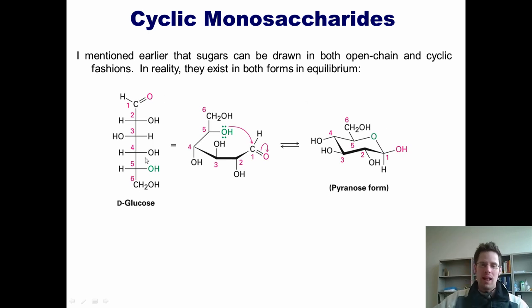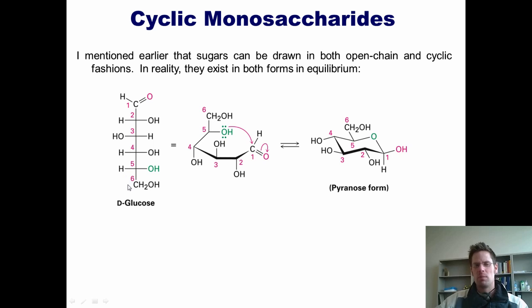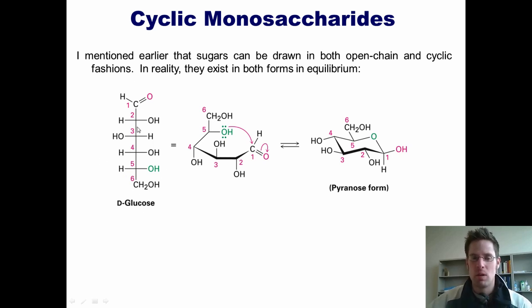You can imagine that ring structure going backwards to the open chain structure by doing the reverse. If this green oxygen steals a hydrogen off of the anomeric OH and the electrons thrust down to form a double bond and this opens back up, we go backwards to the open chain form. So in reality, both of these molecules are glucose. Glucose in real life exists only in a small amount as the open chain form and spends most of its time in its ringed form.